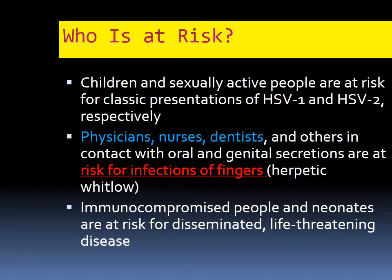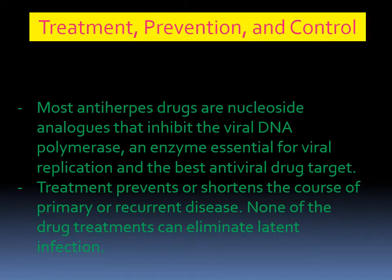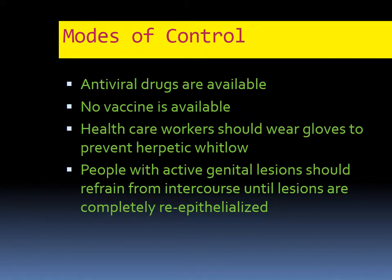So what do we do? We have antiviral therapy. Same rule as before — stopping attachment and so on. The objective of treatment is: you cannot take the virus away from the system. But what you need to do is prevent or shorten the course of primary or recurrent disease, or alleviate pain. That's the purpose of antiviral therapy. We have antiviral drugs. Unfortunately, no vaccine is available for herpes. Healthcare workers should wear gloves to prevent herpetic whitlow.